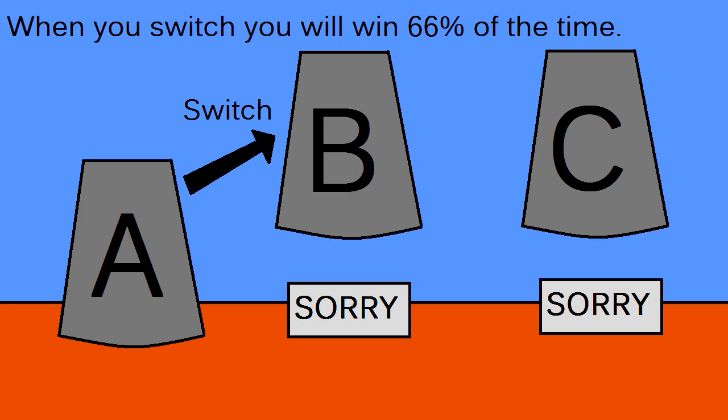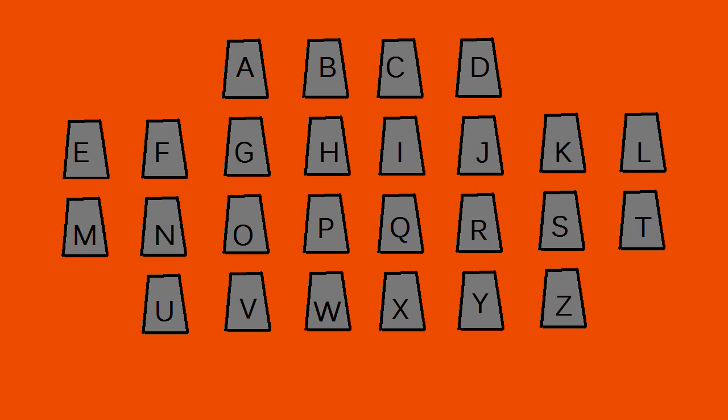Let's take this a step further to illustrate the point more thoroughly. Let's say you now have to deal with 26 cups instead of 3. The 26 cups are labeled A to Z. Only one cup is a winner, and you have to choose one of them. The odds of you picking the correct cup now is 1 out of 26. In other words, not likely at all.